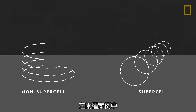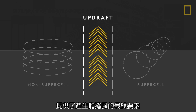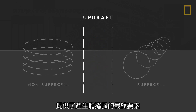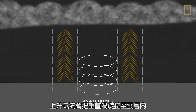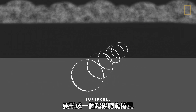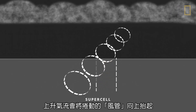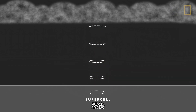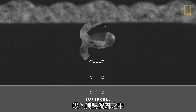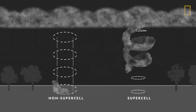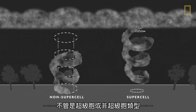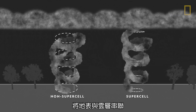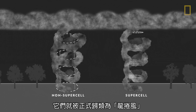In both cases, an upward current of wind called an updraft provides the final ingredient for creating a tornado. In a budding non-supercell tornado, an updraft stretches its vertical vortex until it reaches the clouds. To create a supercell tornado, an updraft lifts the rolling pipe of wind upward until it stands upright, then pulls condensation from the skies and into the spinning vortex. As soon as the vortices connect the ground to the clouds, they are officially classified as tornadoes.